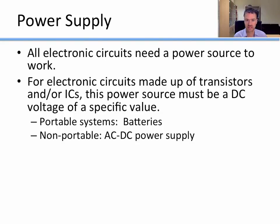Non-portable things, usually stuff you plug into the wall, will have an AC to DC power supply because the electricity that comes out of the wall is alternating current and we need to convert it to DC direct current to power our electronic devices.